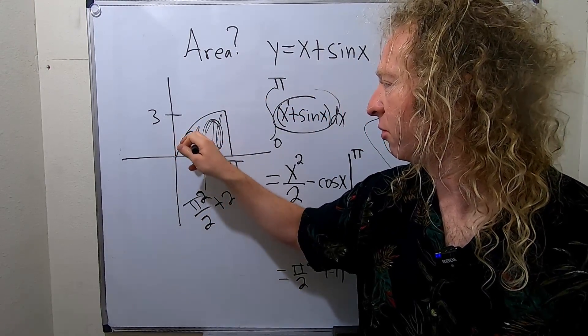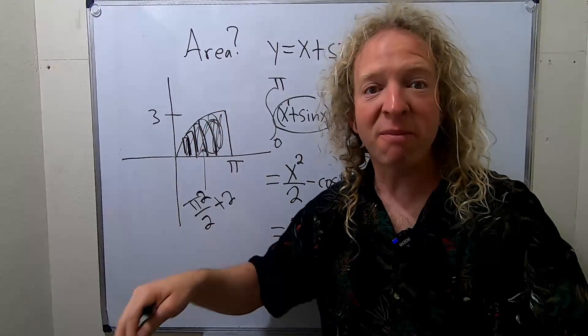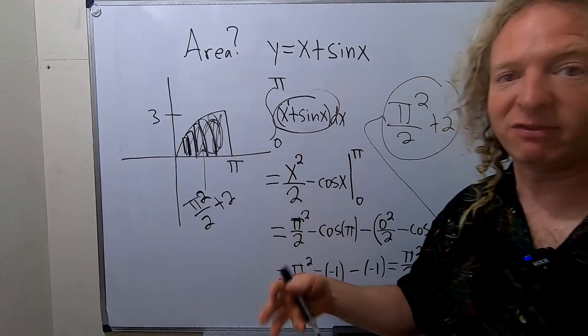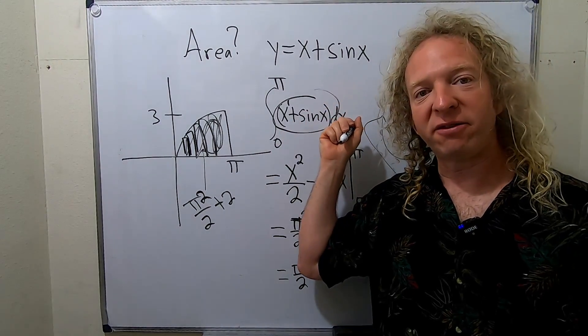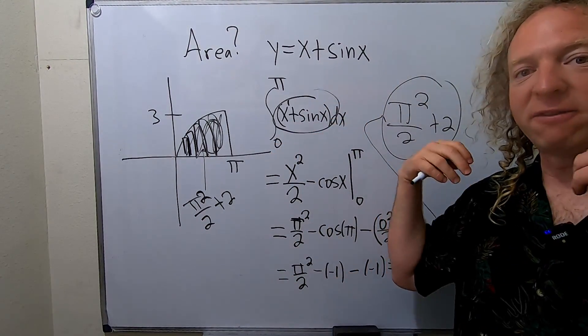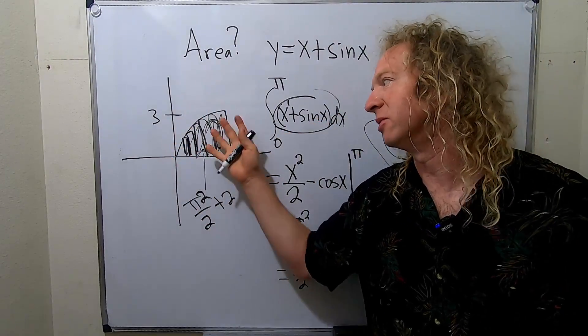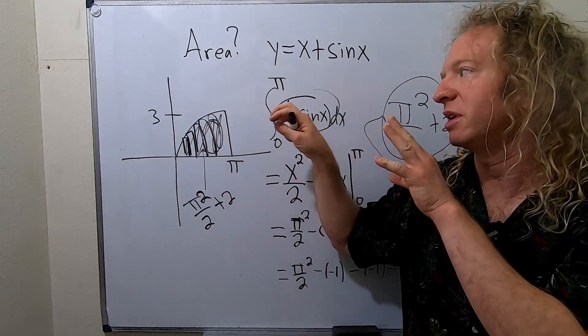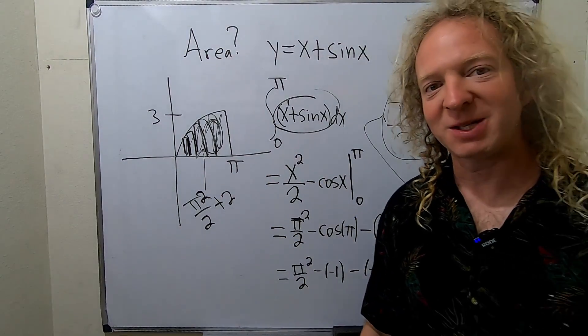You approximate this with rectangles and then you take the limit of the sum of infinitely many rectangles and that gives you the area. This is actually equal to a sum of infinitely many rectangles and that covers this area and gives you the area. So I hope this video has been helpful. Take care.